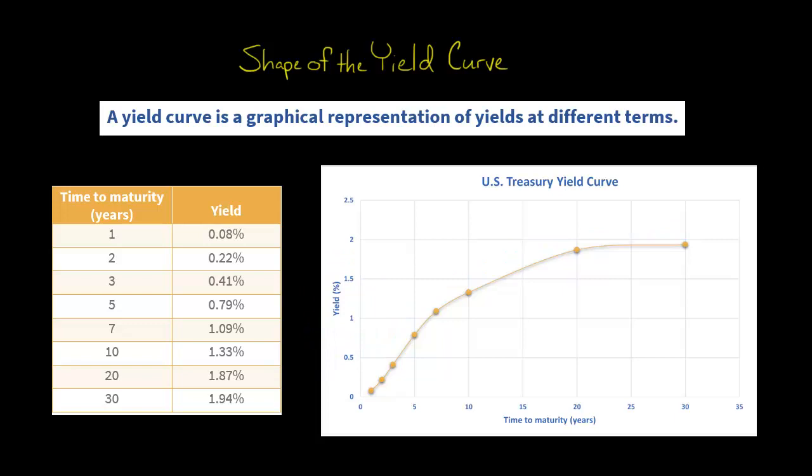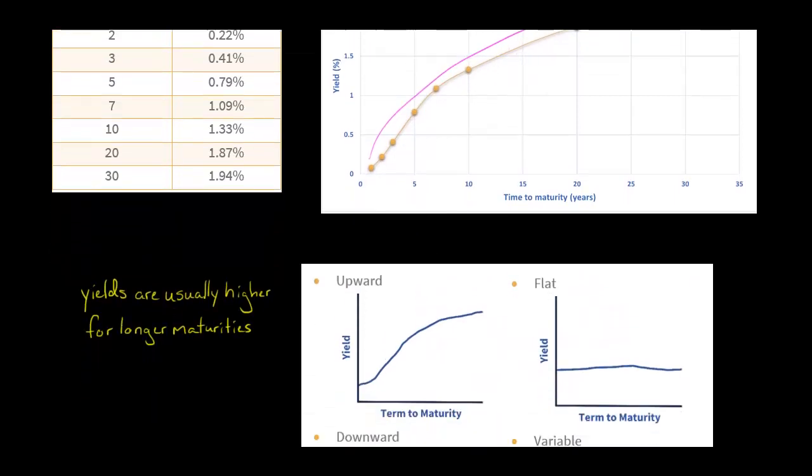Now, if you look at the yield curve at any given point in time, it's most likely going to have an upward sloping shape like this, but not always. It could have different shapes.